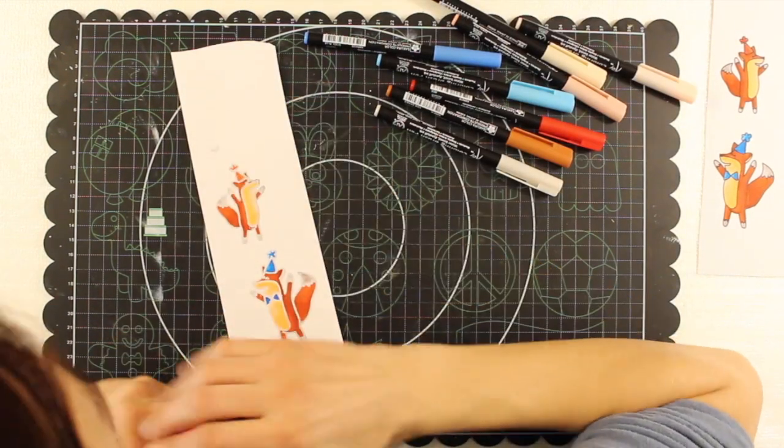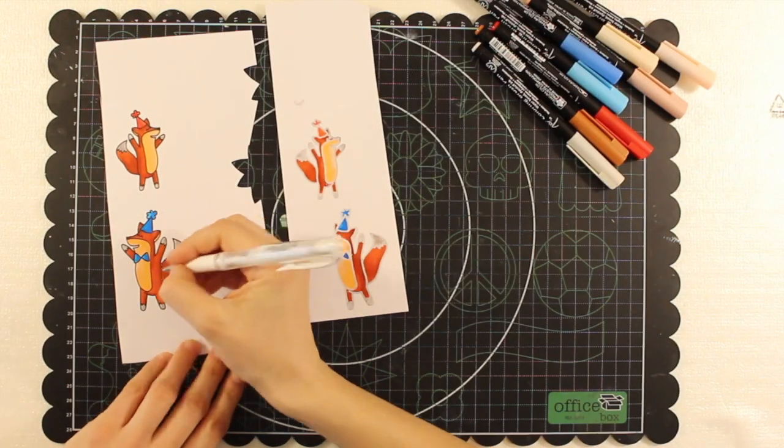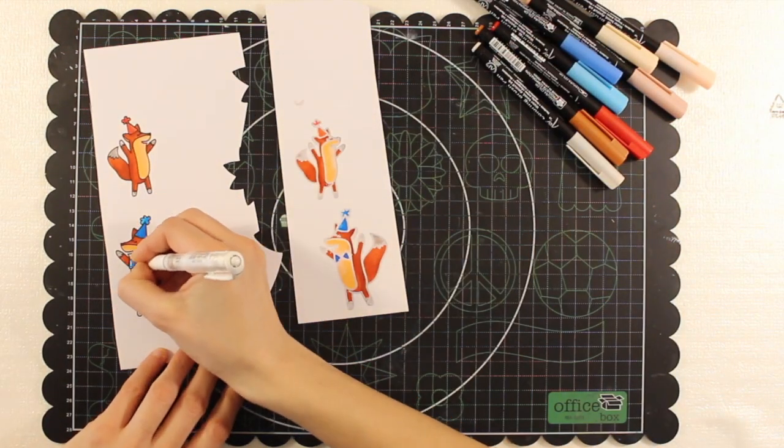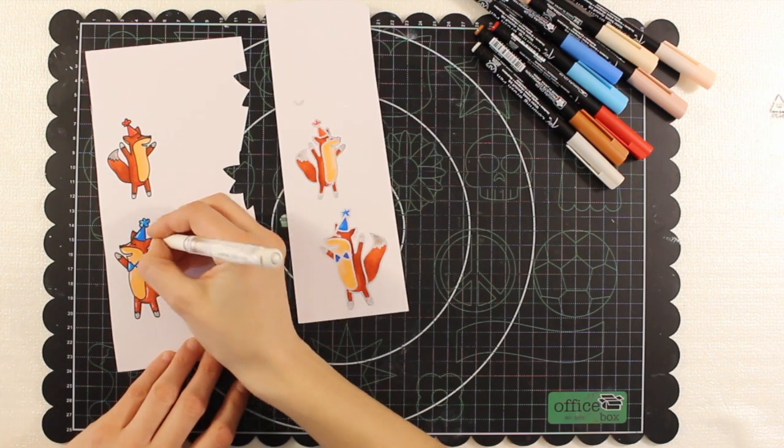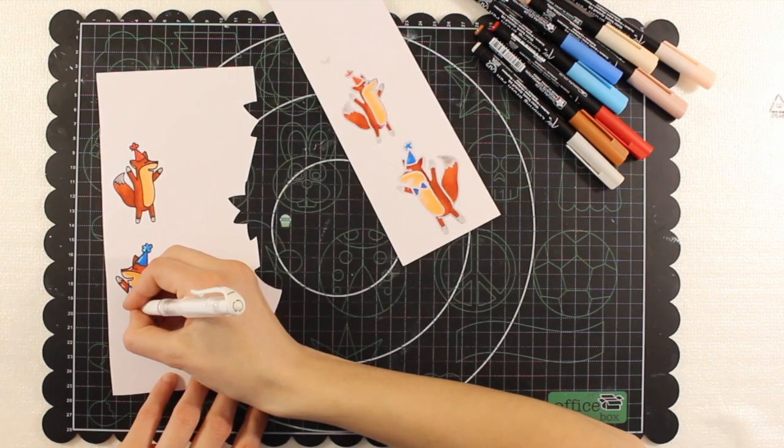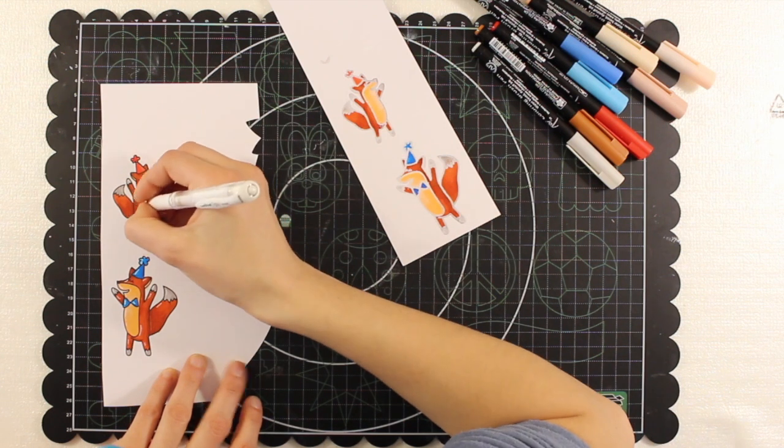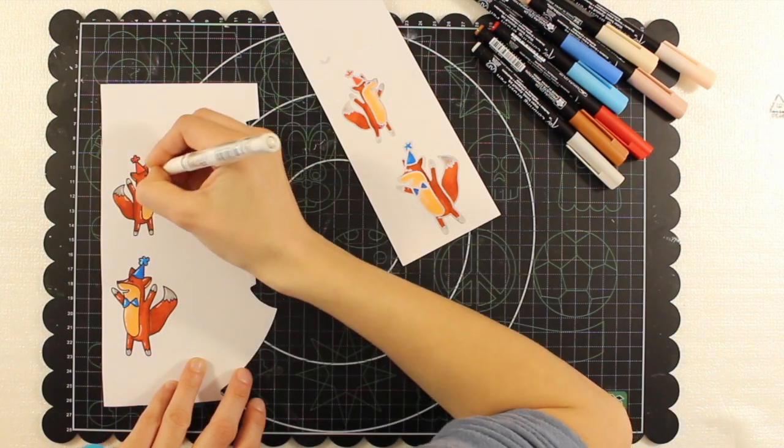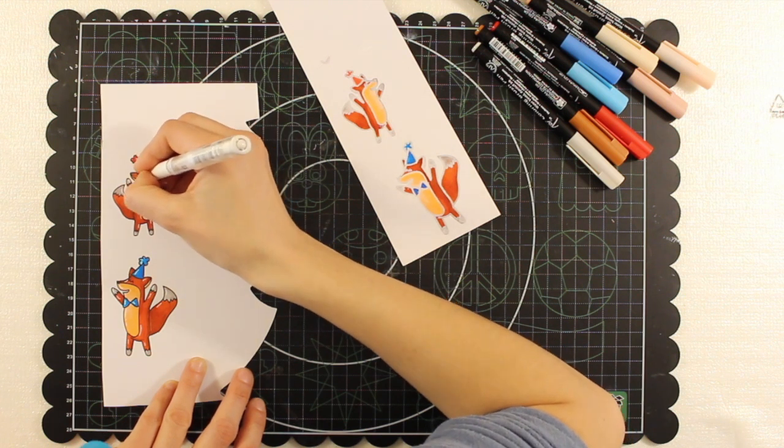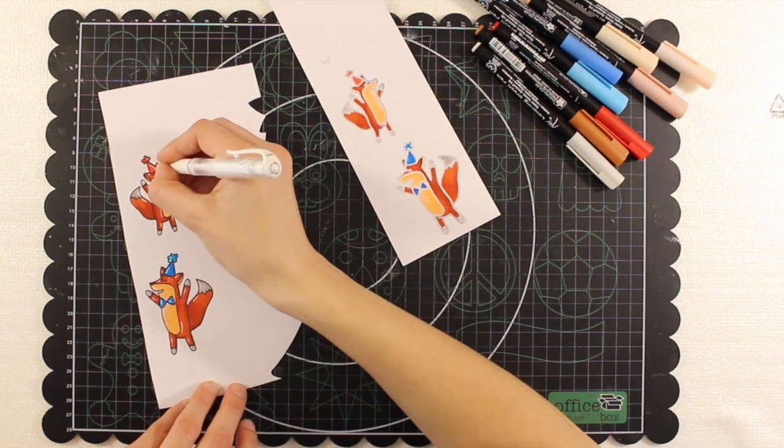First the shadows and then the lighter part. And now with the white gel pen I'm adding some light spots to the images with the black outline. This together with the shadows really helps to give dimension to the images. I really like them.